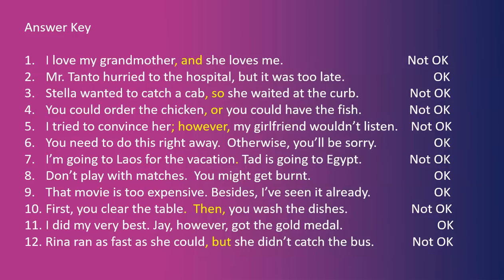Number seven — you need to separate the two sentences with a period: "I'm going to Laos for the vacation. Tad is going to Egypt." Number eight was okay: "Don't play with matches. You might get burnt." Number nine was also okay: "That movie is too expensive. Besides, I've seen it already." Number ten — not okay. Correction: "First, you clear the table. Then, you wash the dishes." Eleven was okay: "I did my very best. Jay, however, got the gold medal." Twelve — not okay. Correction: "Rena ran as fast as she could, but she didn't catch the bus."